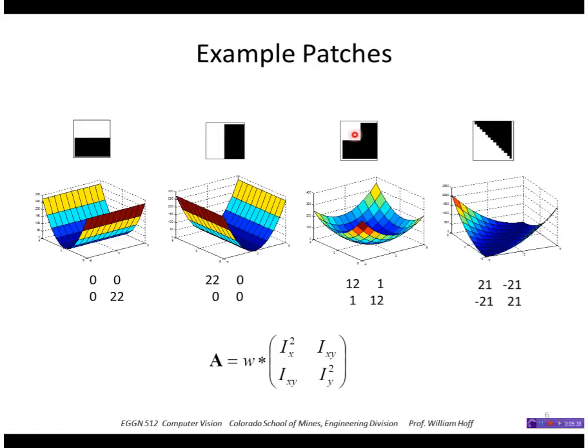For a corner, so this is a point, a patch that would be easy to localize. I have a nice minimum and strong or high values in the diagonals and lower zero values in the off diagonal. For a step edge in the diagonal direction, you can see I have strong values everywhere.